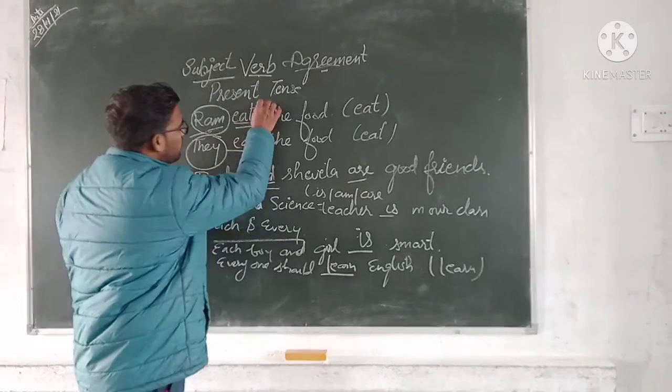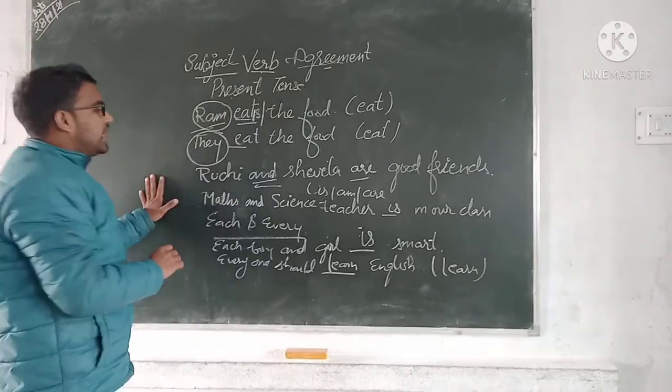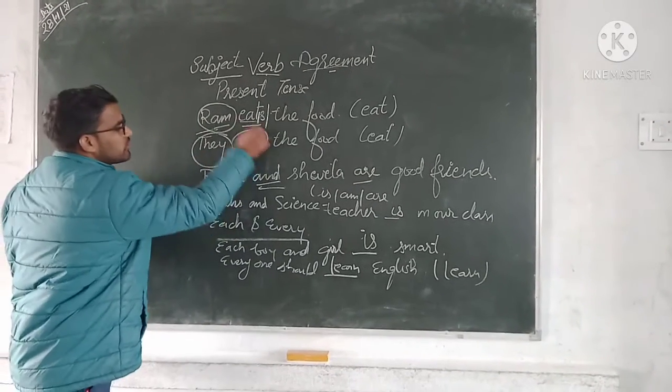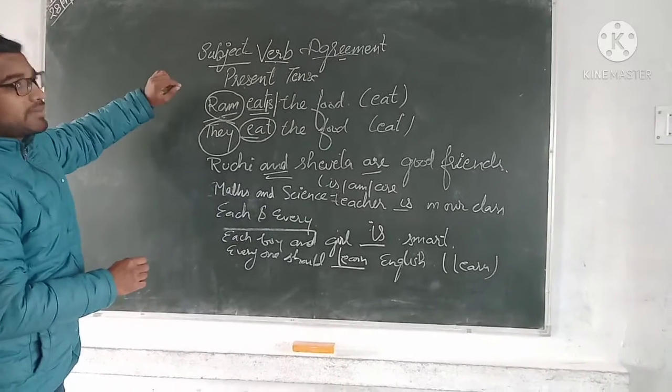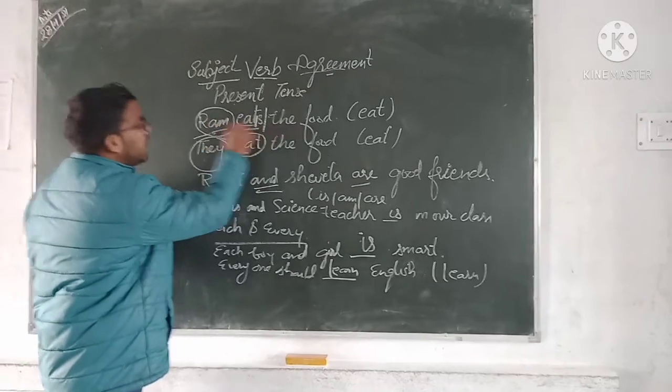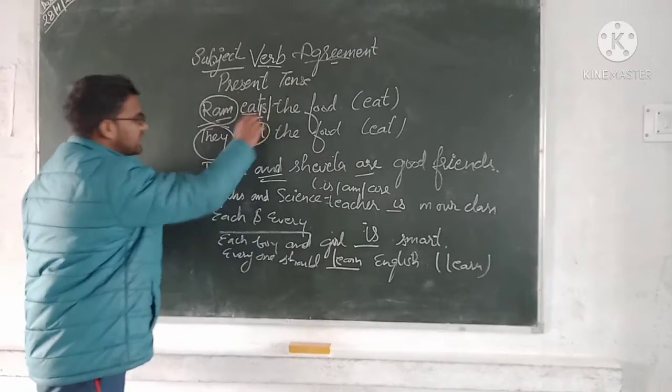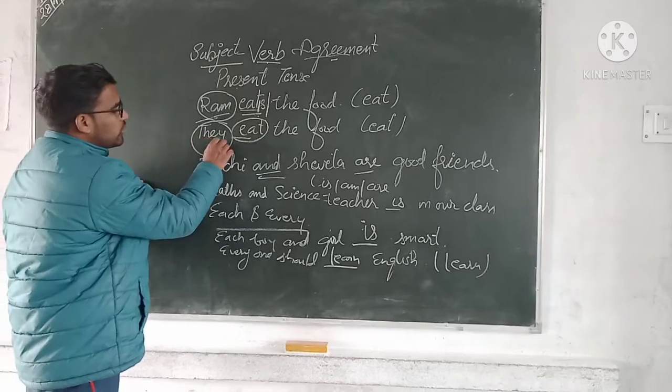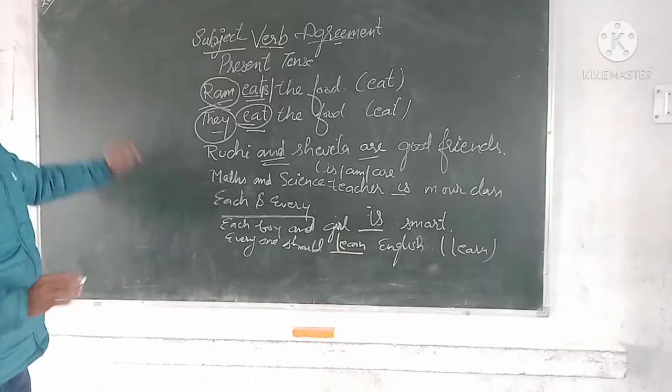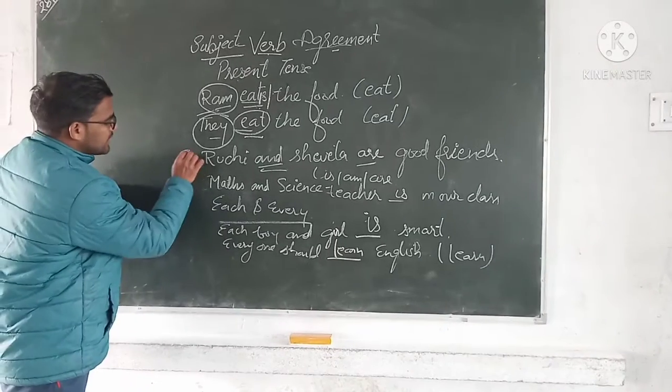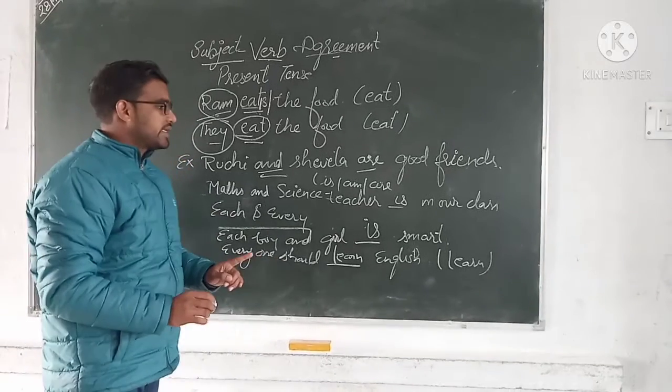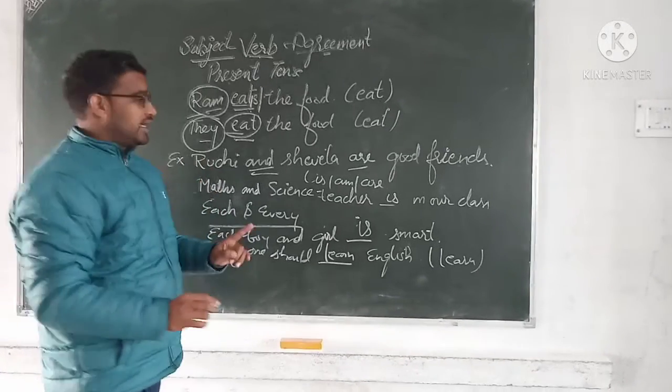We always use the first form of the verb plus 's' in present tense. If the subject is plural, we use the first form only without 's'. Subject-verb agreement means choosing the verb according to the subject. If singular, then the verb's first form plus 's' or 'es'. If plural, the verb's first form only, without 's' or 'es'.